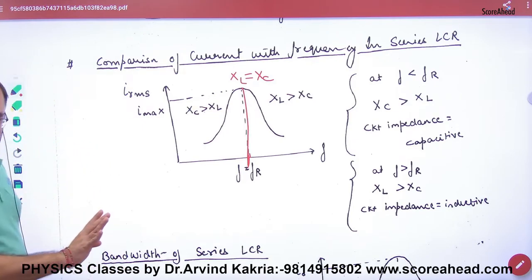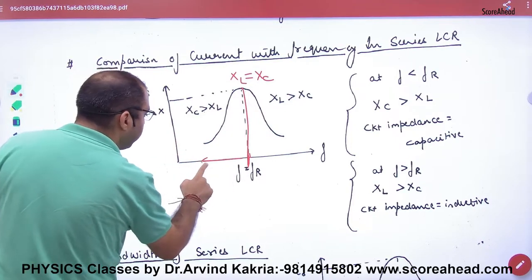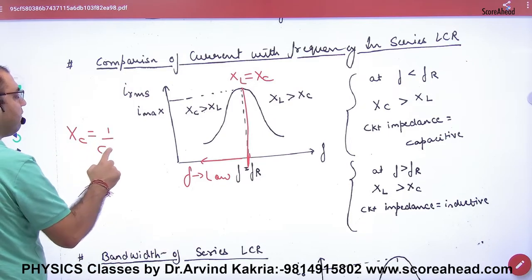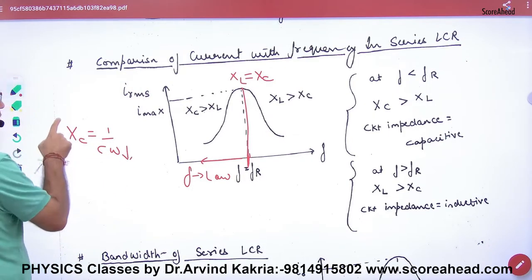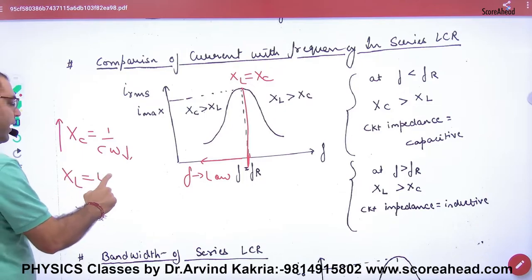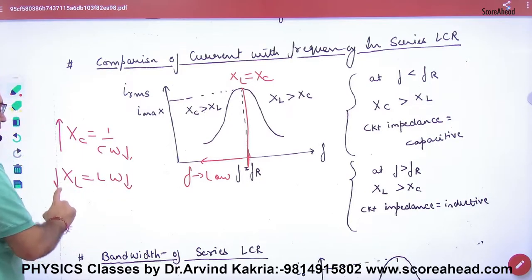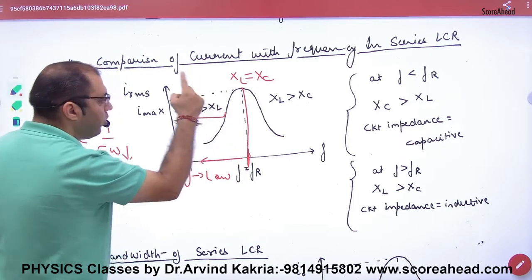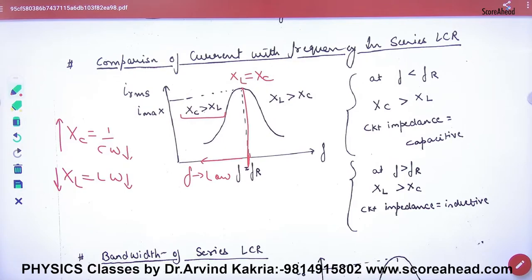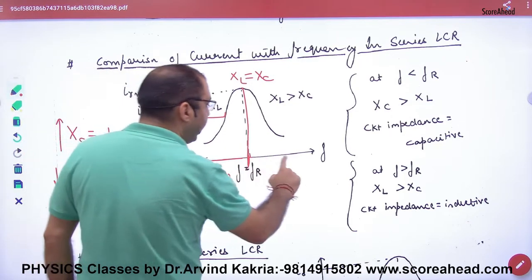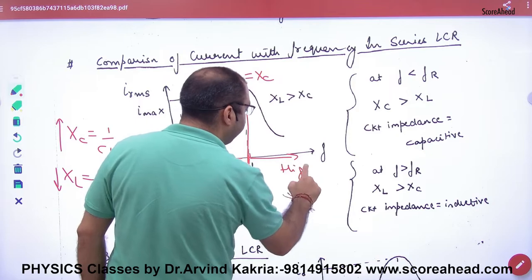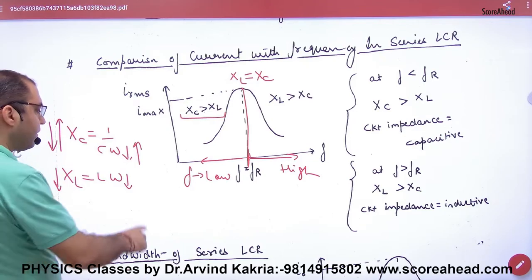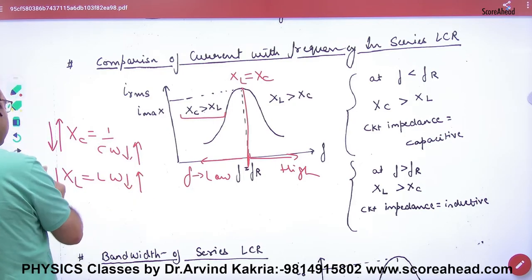Clear here, this was the resonance. If you take the frequency higher, then XC decreases, and if the frequency of the omega is higher, then XL also increases.